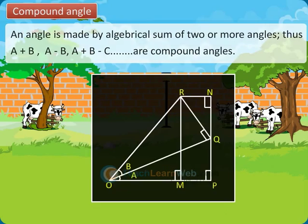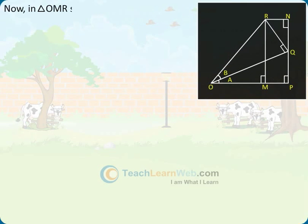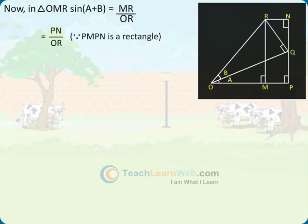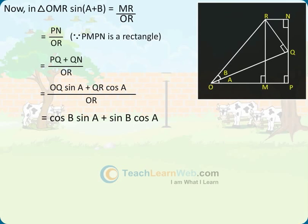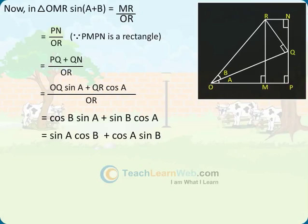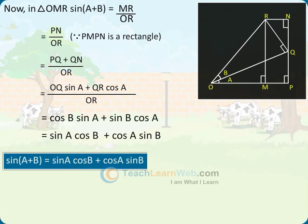From the figures, in triangle OMR, sin(A+B) equals MR divided by OR, which equals PN divided by OR, since PMPN is a rectangle, which equals PQ plus QN divided by OR, which equals OQ·sinA plus QR·cosA divided by OR. Therefore, sin(A+B) equals sinA·cosB plus cosA·sinB.